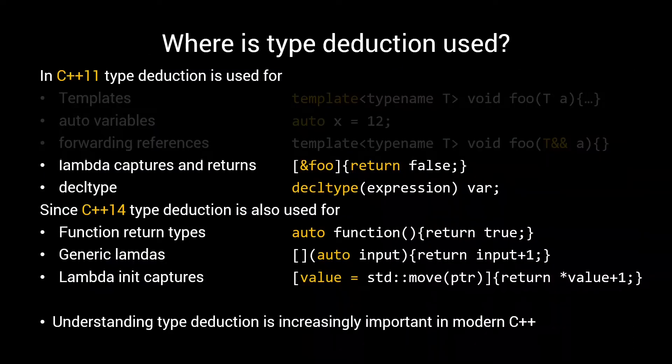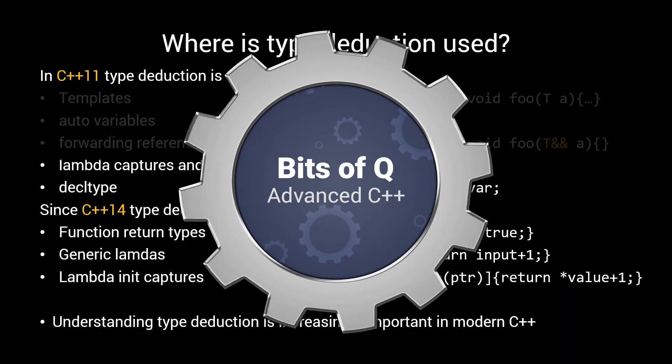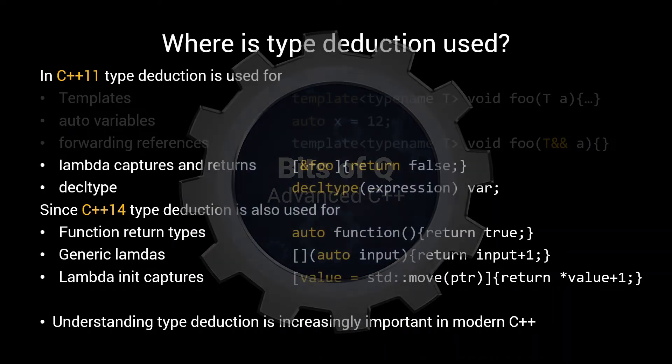In the second part we will be talking about all the other forms of type deduction. In particular, the rules involving the various kinds of type deduction when dealing with lambdas, function return types, and decltype expressions. My name is Quirijn, and this is a Bits of Q advanced C++ tutorial. Let's get started.